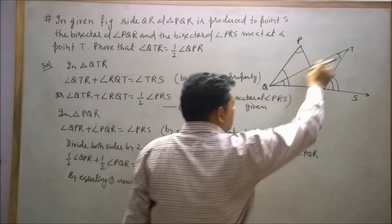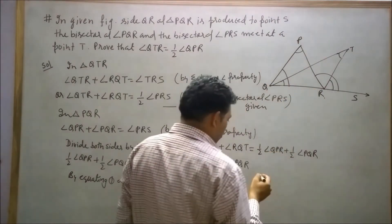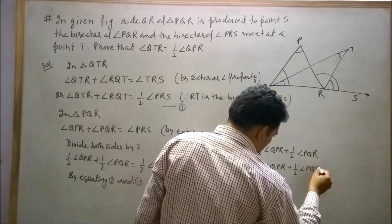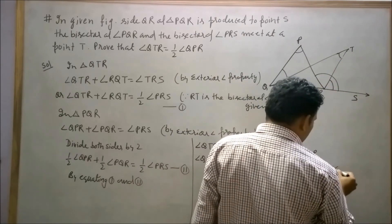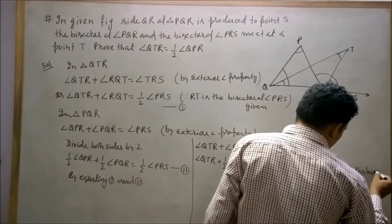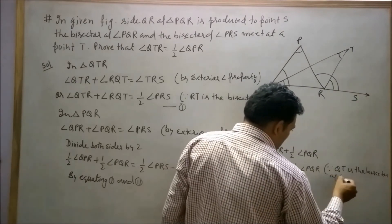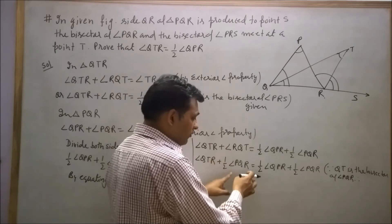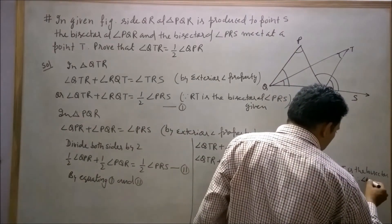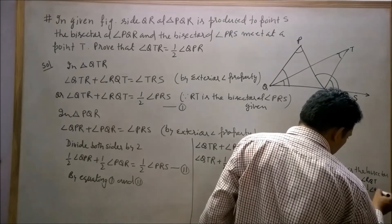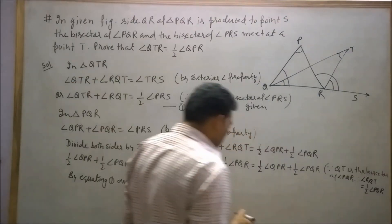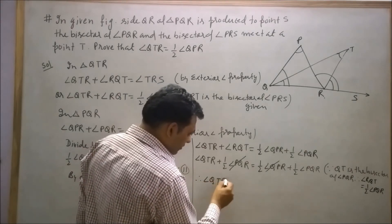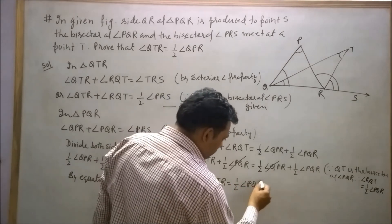Angle QPT is equal to angle QTR plus half of angle PQR. Since QT is the bisector of angle PQR, QT is the bisector of angle PQR. Therefore, the term half of angle PQR will be cancelled from both sides. Therefore, angle QTR is equal to half of angle QPR. Hence proved.